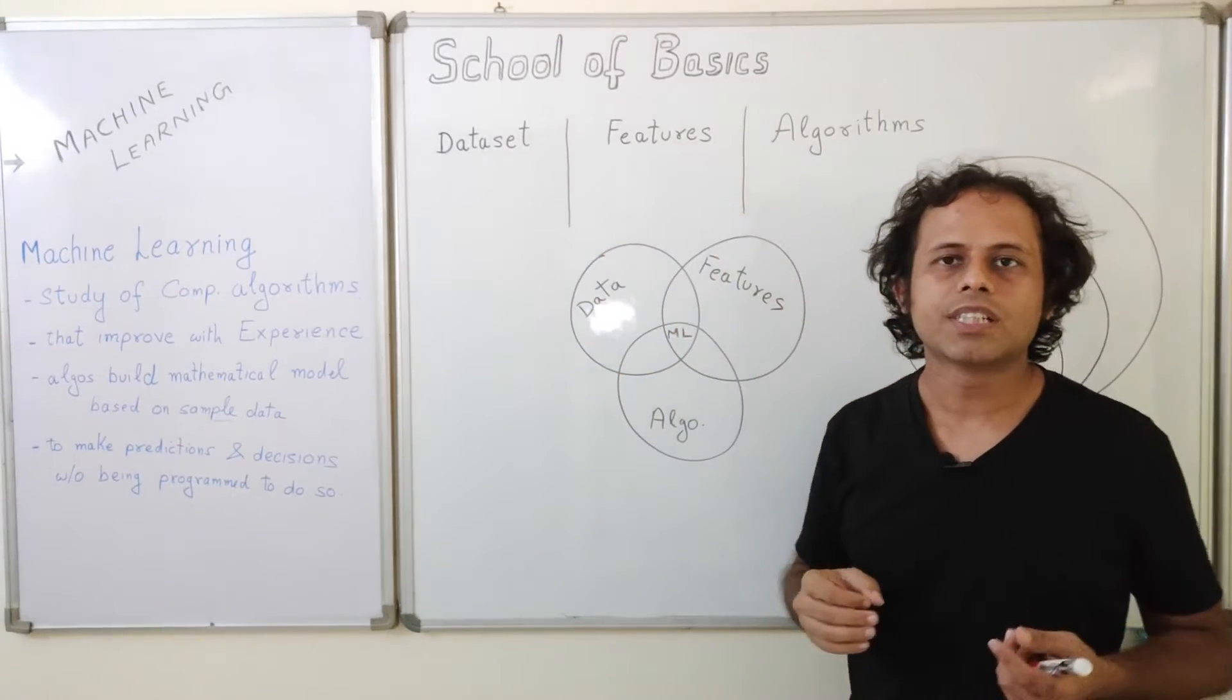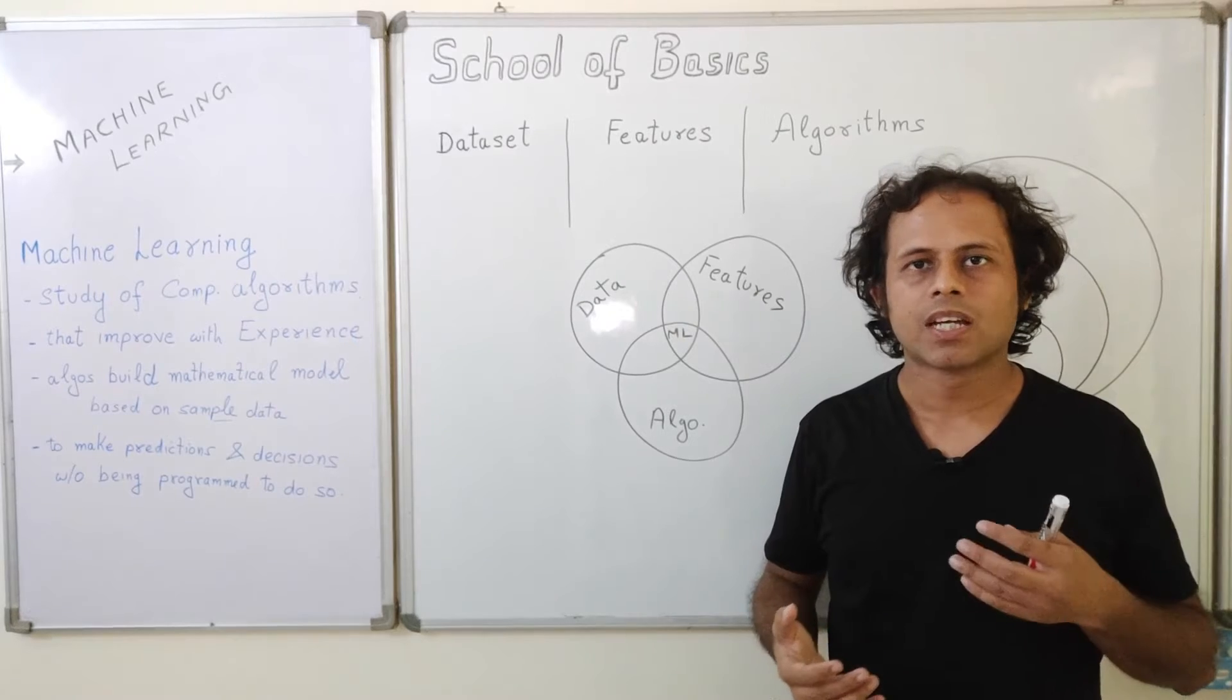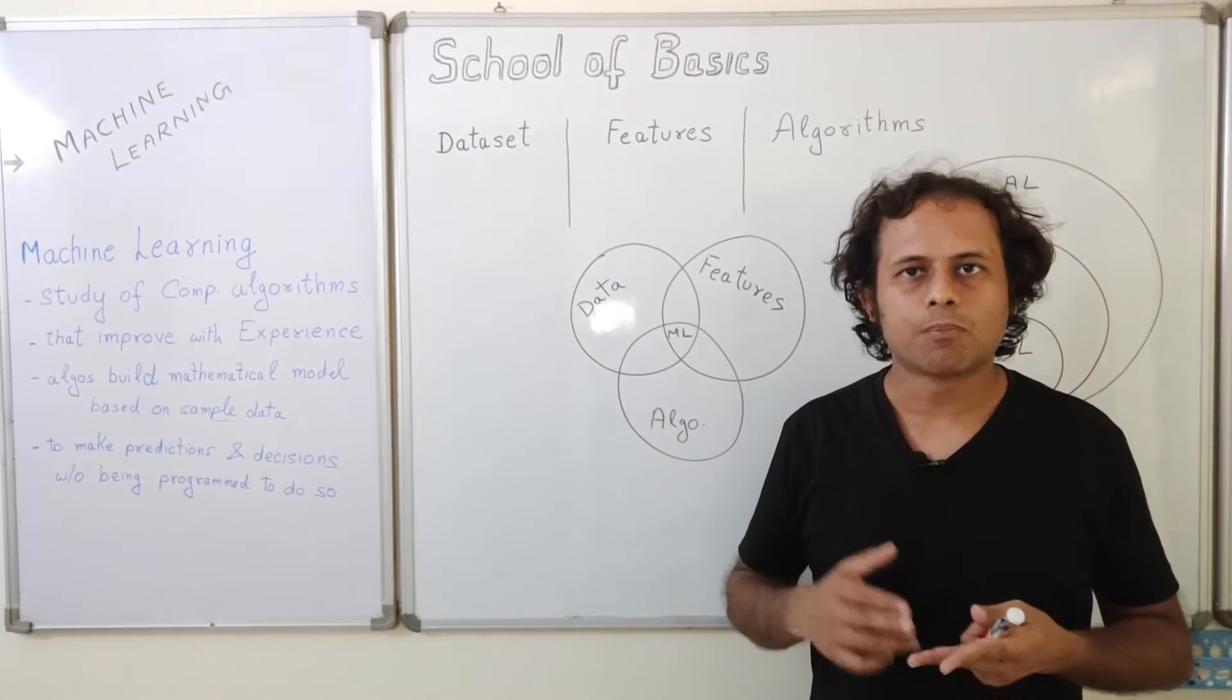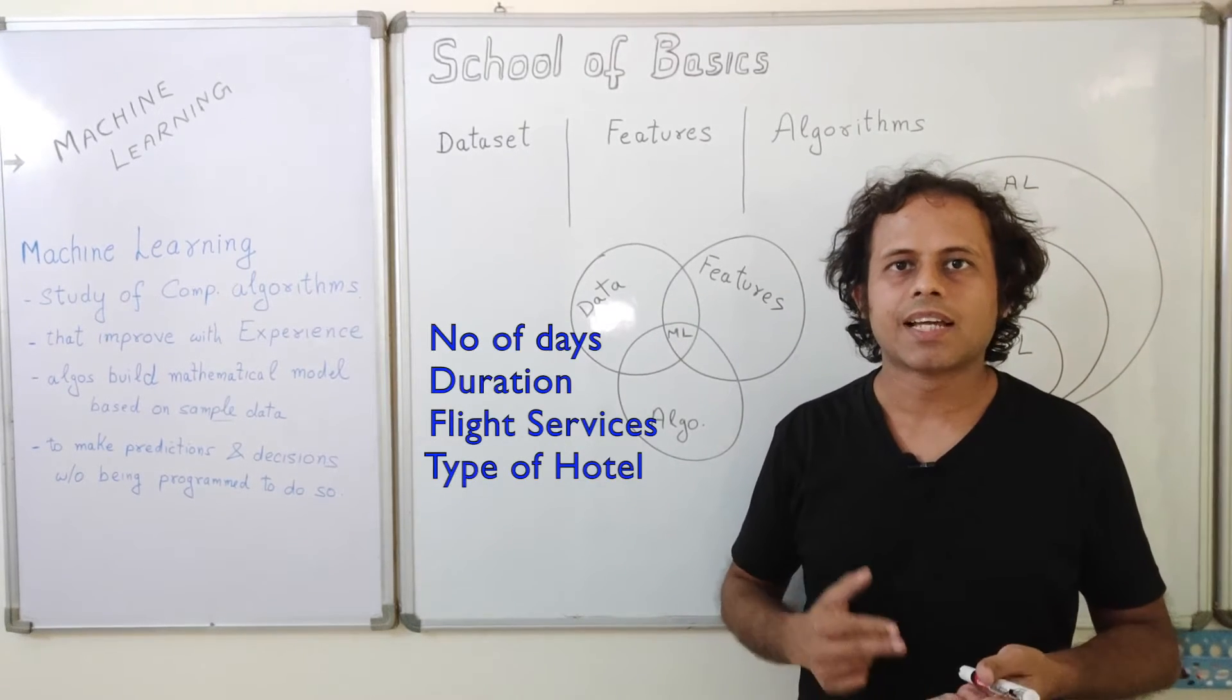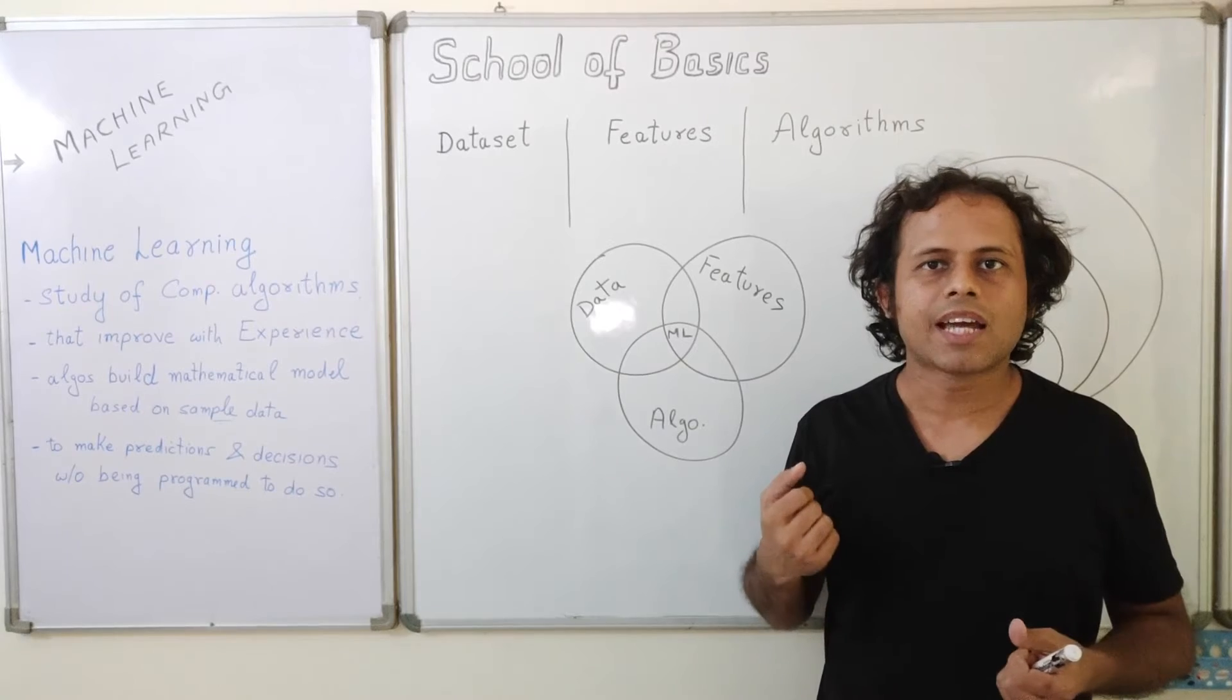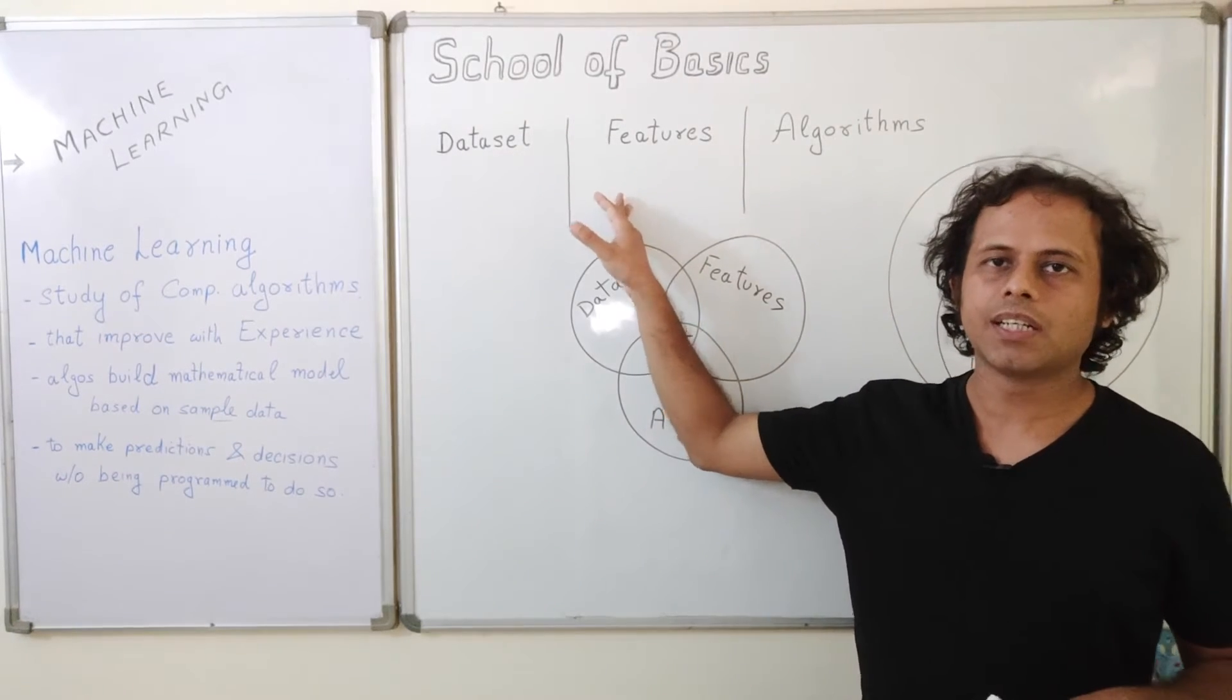Then we have features. Features are individual measurable properties. For example, if we go back to our example of calculating the cost of our holiday, in this case features can be the number of days, the airline services, the type of hotels like three, four or five star hotels you want to book. All this will come as features and a feature can be numeric, it can be a string or it can even be graphical. So this is the second component of machine learning.